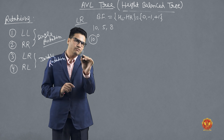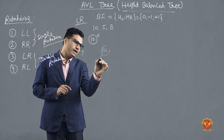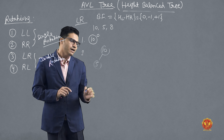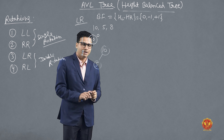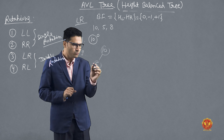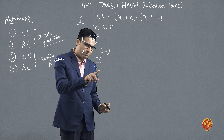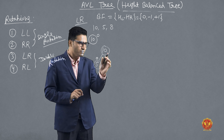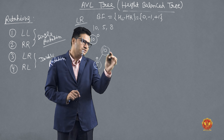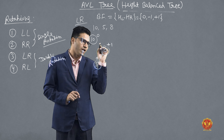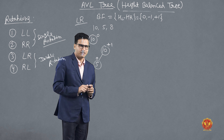Now insert 5. Since 5 is smaller than 10, it becomes the left child of 10. Now check the balance factor: the balance factor of 5 is 0. For node 10, height of left subtree minus height of right subtree is 1 minus 0, which equals 1. So the balance factor of 10 is 1.